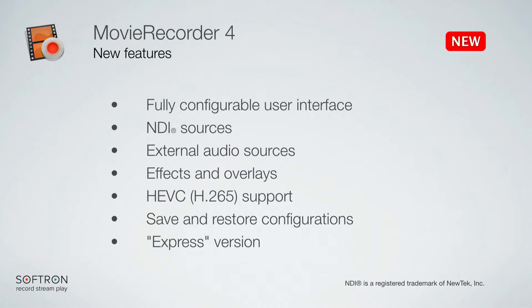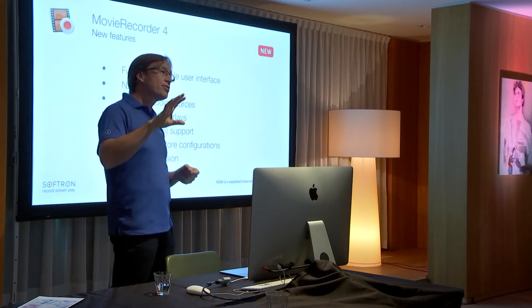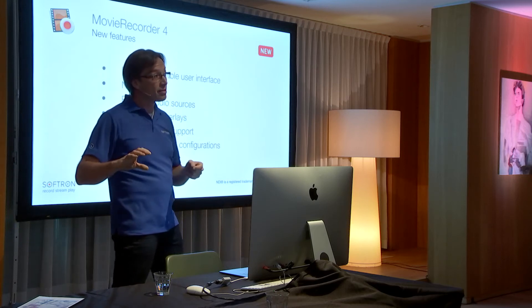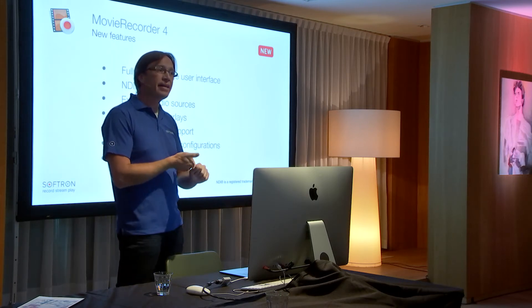We also have save and restore configuration, which I'll show in the demo. And we are coming with an Express version — we're changing the product lineup. Previously there was MoveRecorder 3 with a Pro Codecs option. We're getting rid of that and offering MoveRecorder 4 with all options included. But we also wanted a lighter version: MoveRecorder Express, which is more affordable but doesn't have some pro features. For example, metadata is not supported in Express, and codecs like XDCAM and XAVC are not included — you can encode in ProRes and H.264 only. There's also no VTR control, but you can still record NDI and multiple channels.